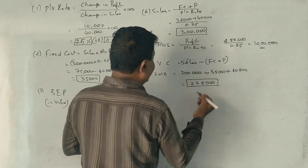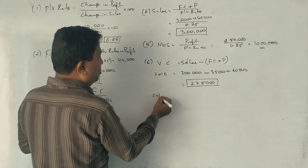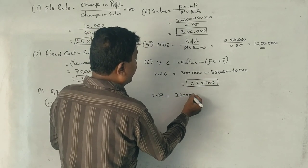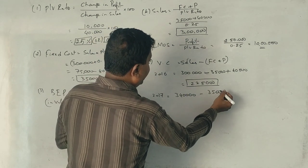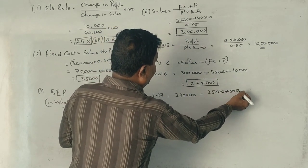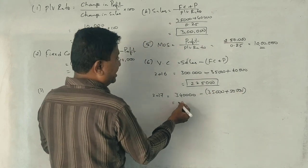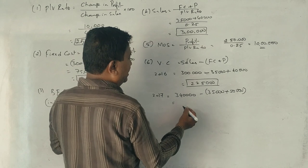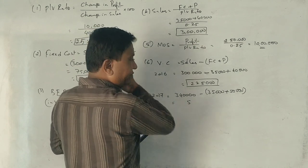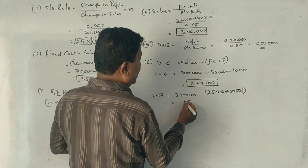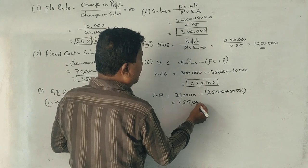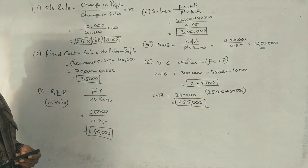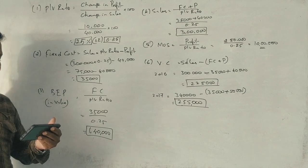Variable cost for 2017: sales 3 lakhs 40 minus fixed cost 35,000 minus profit 50,000. Total 3 lakhs 40 minus 85,000 equals 2 lakhs 55,000.